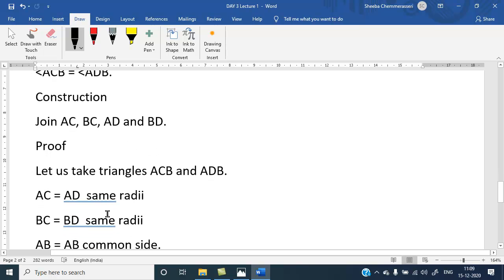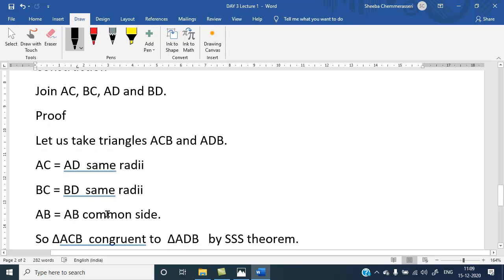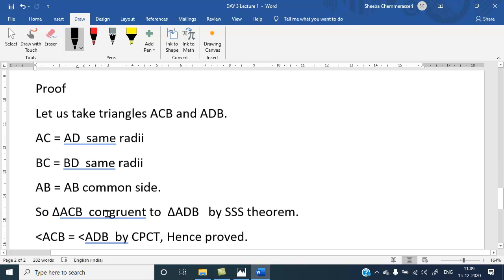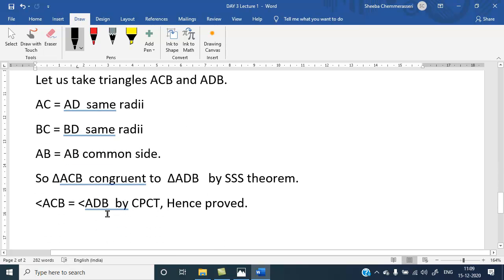Let us take triangle ACB and ADB. AC equal to AD, same radii of the circle. BC equal to BD, same radii of the circle. AB equal to AB, common side. So, triangle ACB congruent to triangle ADB by SSS theorem. Side, side, side theorem. Angle ACB equal to angle ADB by CPCT. Hence, proved.